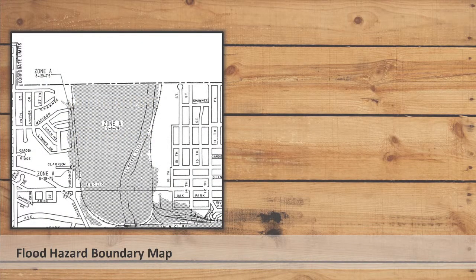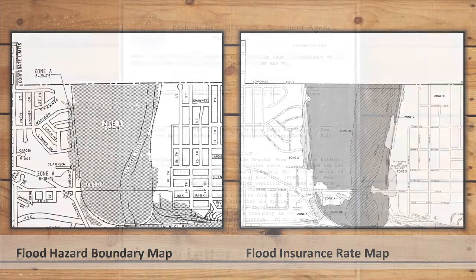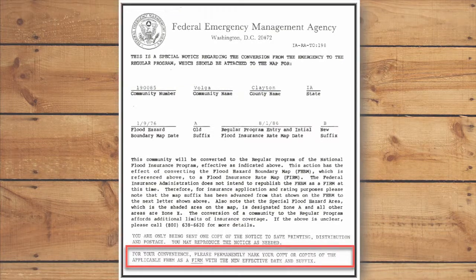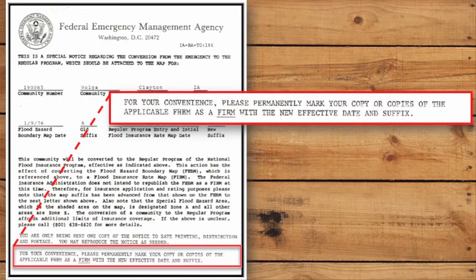Beginning in the mid-1980s, FEMA began converting the information and boundaries from the flood hazard boundary maps onto new FIRMs for communities that were unlikely to receive a detailed flood insurance study. However, this proved to be more expensive than originally anticipated. As a consequence, for many communities, the flood hazard boundary map was simply converted to a FIRM by letter. This letter instructed the community to permanently mark copies of its flood hazard boundary maps as FIRMs and include the new effective date in their title blocks.